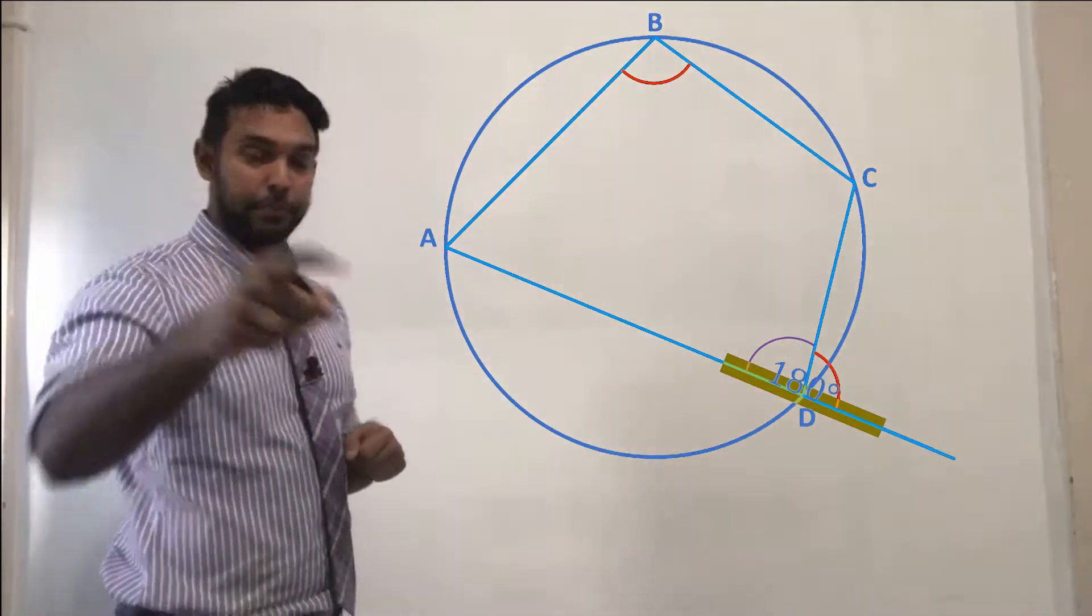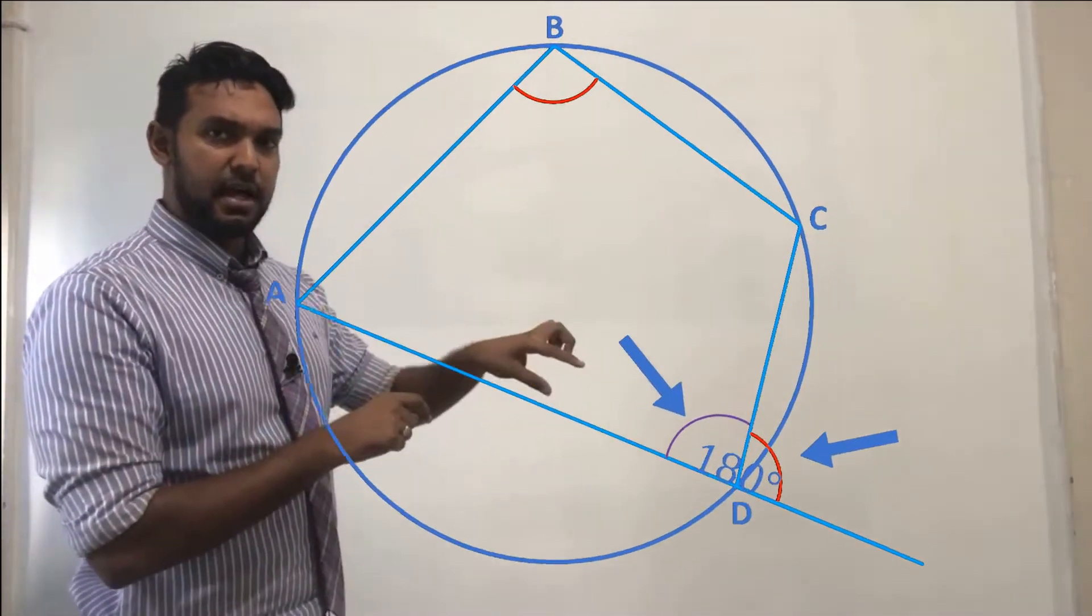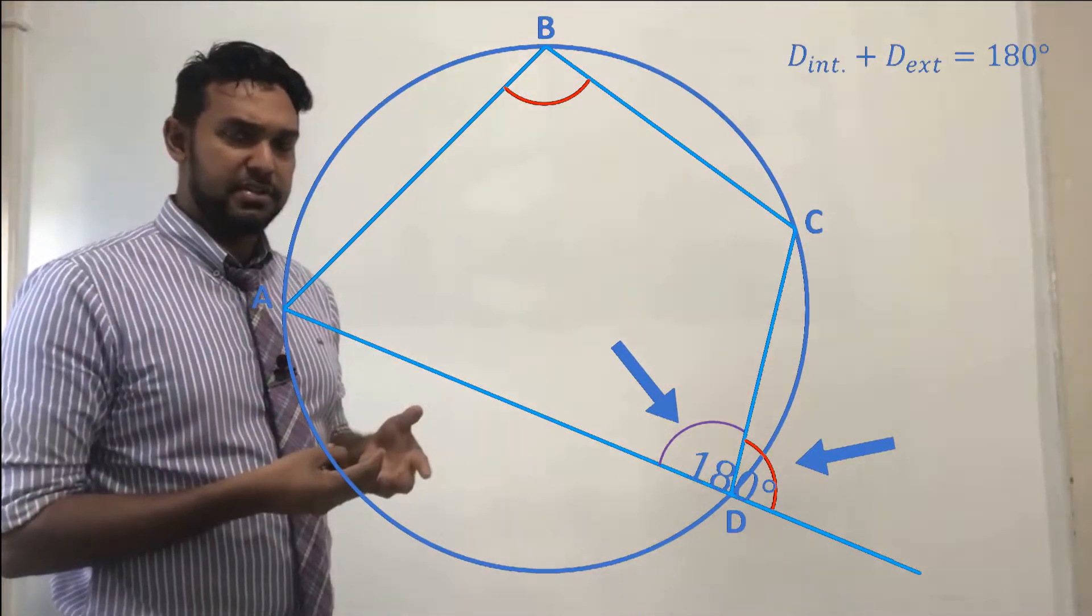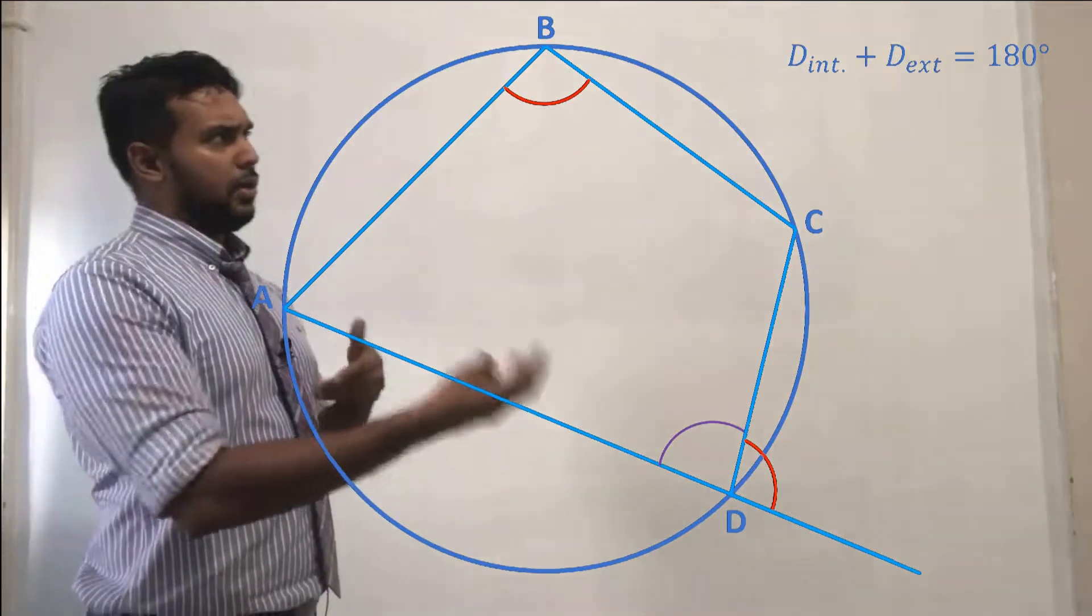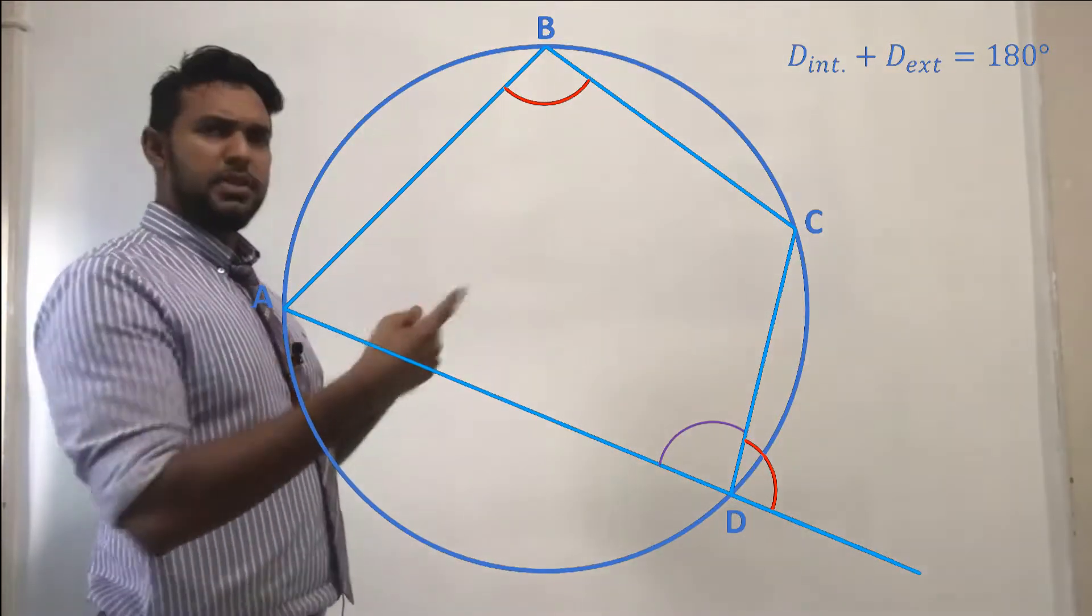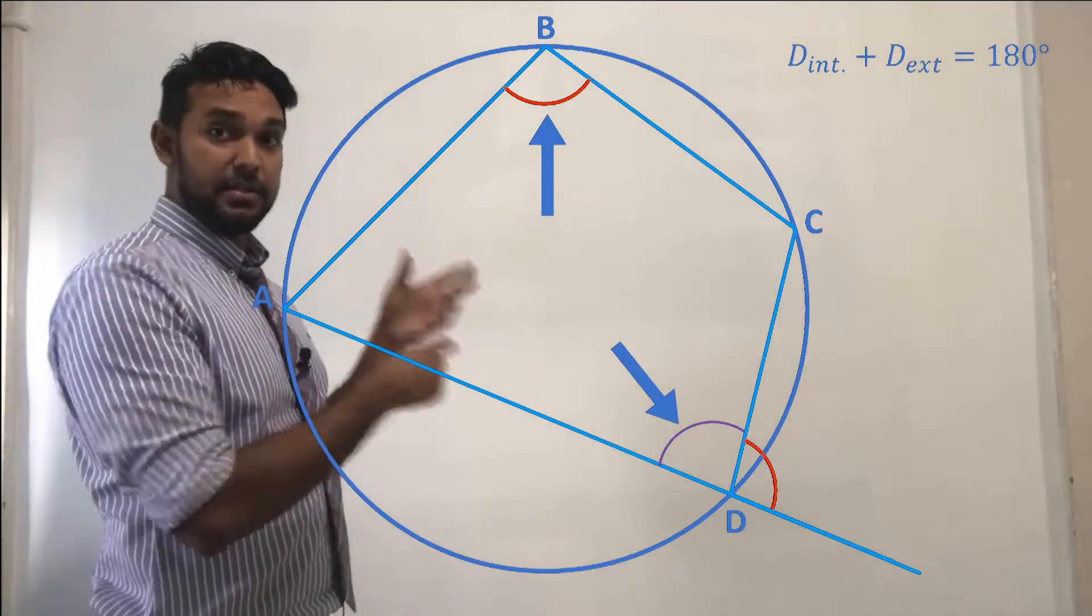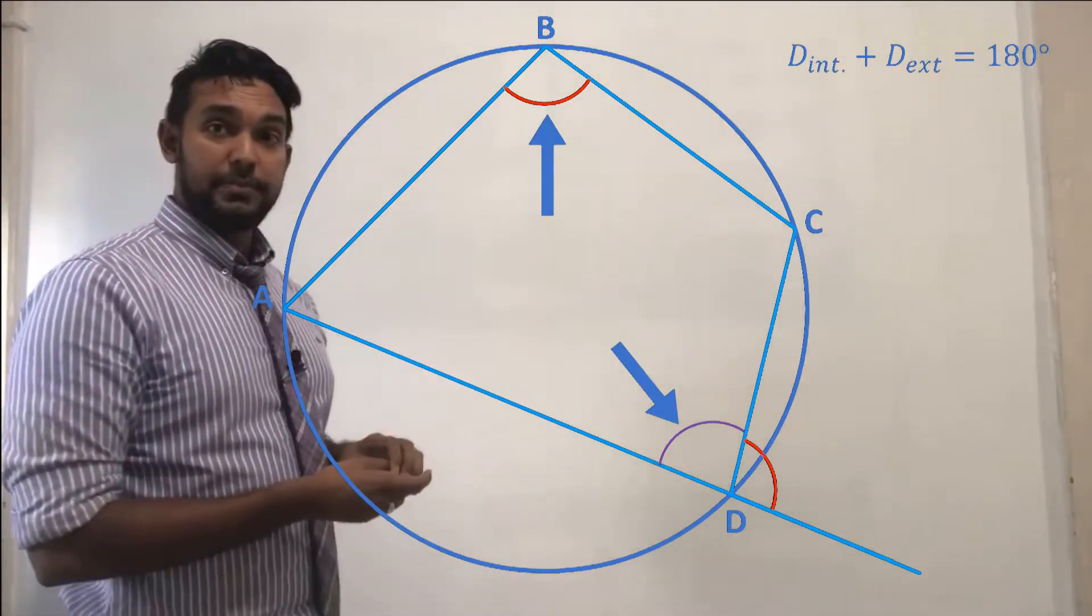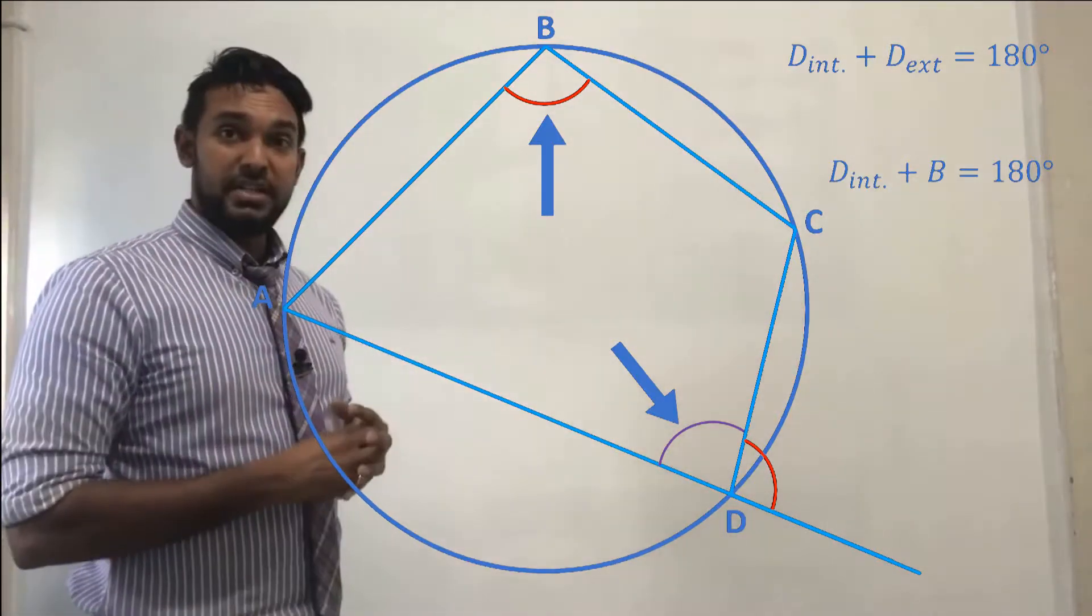Which means, therefore, that the internal angle plus the external angle will give us 180 degrees. Right? So that's D internal plus D external is 180 degrees. Now, let's consider what we just saw in the previous set of stuff I talked about, that the internal angles, the opposite internal angles, are supplementary. They also add up to 180. So D interior plus B would also be equal to 180 degrees.